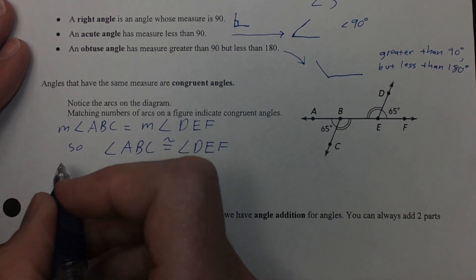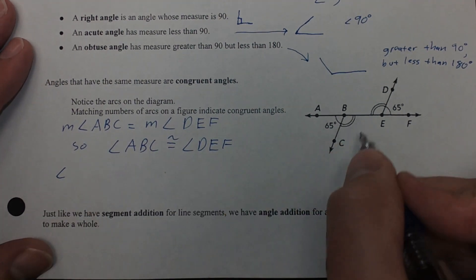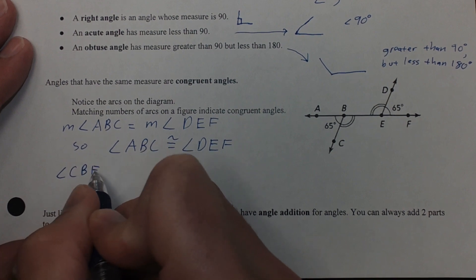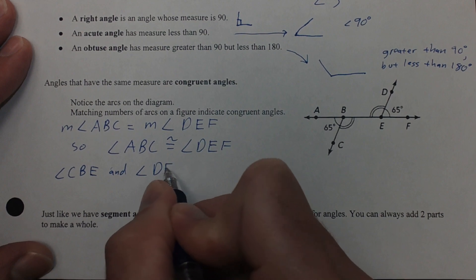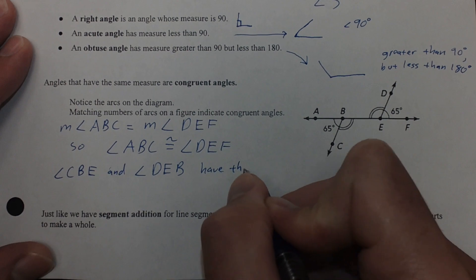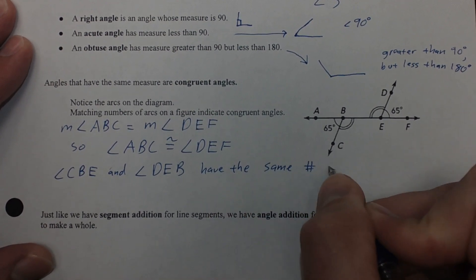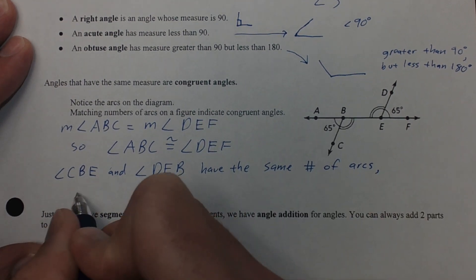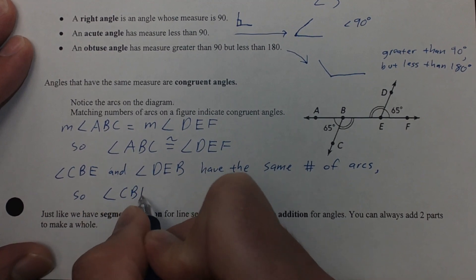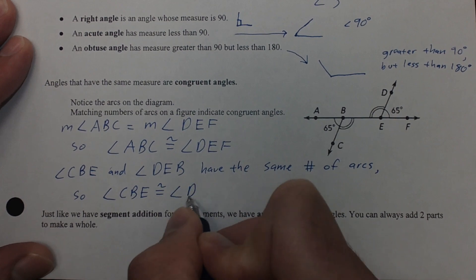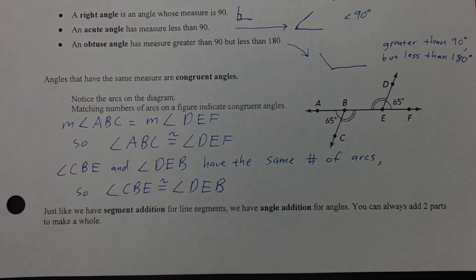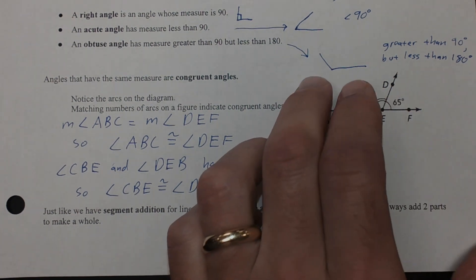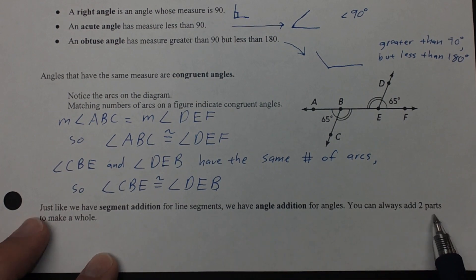For the other angles that have double arcs, we can say angle CBE is congruent to angle DEB — they have the same number of arcs, so they're congruent. Just like we did segment addition in the previous lesson, you can also perform angle addition. Anytime you're doing segment addition or angle addition, part plus part equals whole.